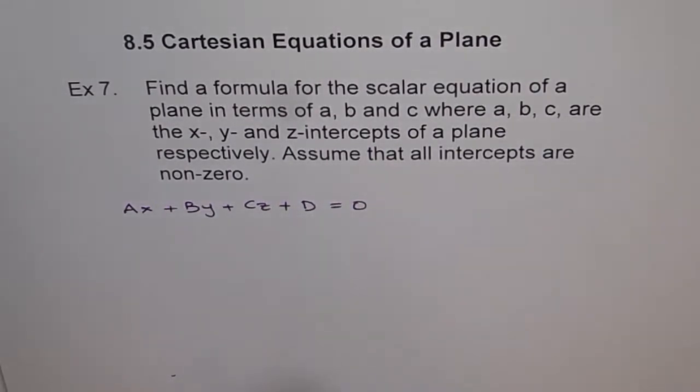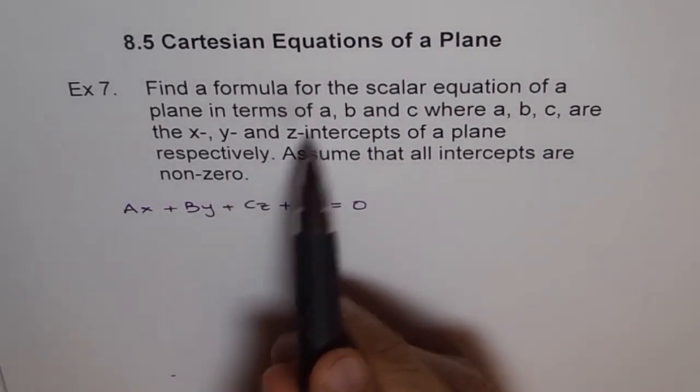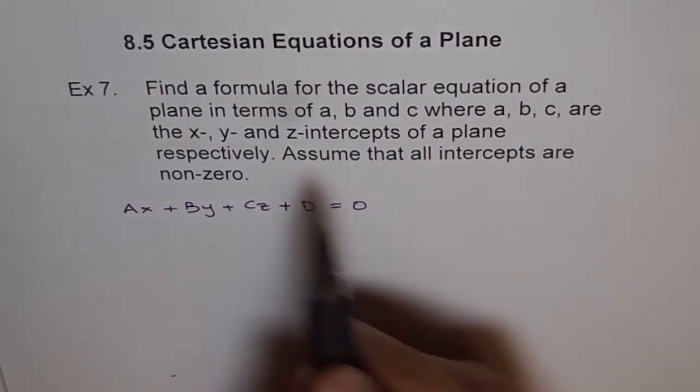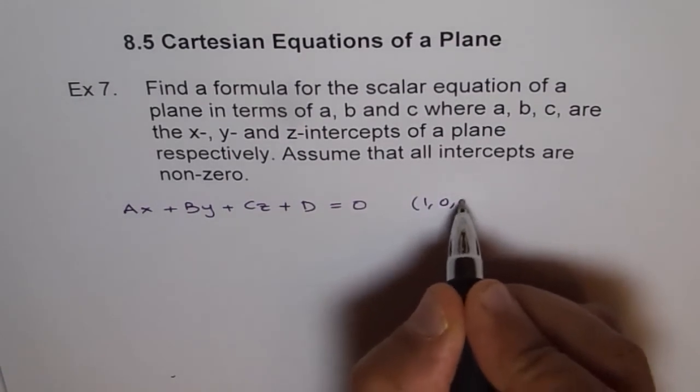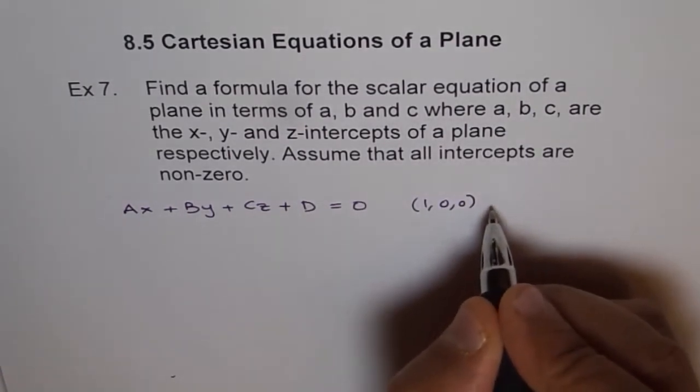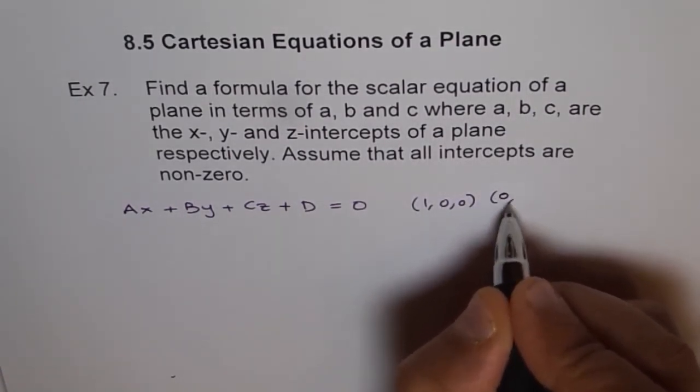Now we are given X intercept, Y intercept, and Z intercept. So what is X intercept? X intercept for us is 1, 0, 0. Correct? Y intercept is 0, 1, 0. Correct?